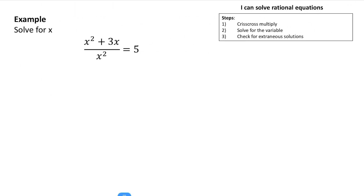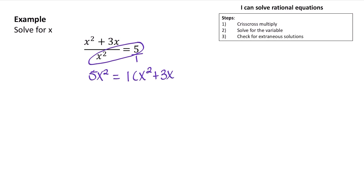Let's try solving this problem for x. You may be wondering why I said crisscross multiply when there's not a fraction on both sides. Remember, if you have a whole number, you can just put it over 1. So I'm going to put this over 1 and use the crisscross multiply method. I'm going to multiply 5 and x squared, giving me 5x squared. On the right side, multiplying 1 and x squared plus 3x gives me 5x squared equals x squared plus 3x.